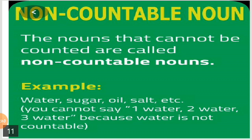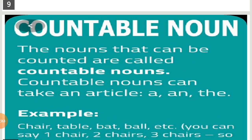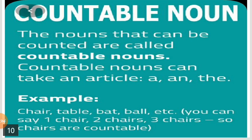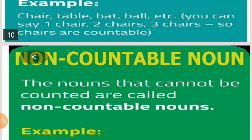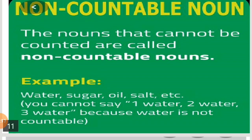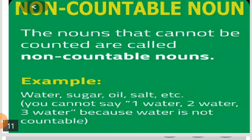I think you have understood. Just a recap: What is a countable noun? Countable nouns can be counted. For example: chair, table, bag, ball. And non-countable nouns are not able to be counted. Examples of non-countable nouns are water, sugar, oil, and salt.